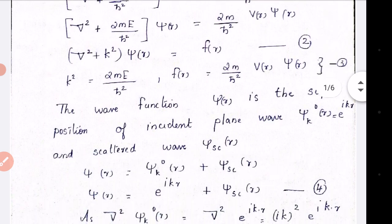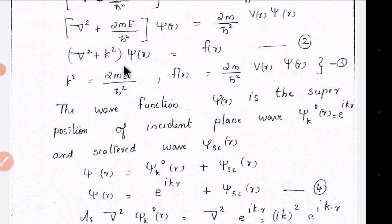The wave function psi of R is the superposition of the incident plane wave psi-k-zero and the scattered wave. So the wave function is equal to the sum of the incident wave, that is e raised to i k dot r, and the scattered wave psi-sc-r. Thus psi of R equals psi-k-zero-r plus psi-sc-r, which is e raised to i k dot r plus psi-sc-r.